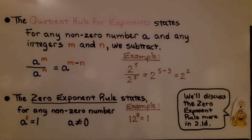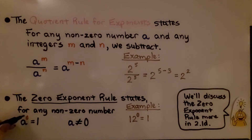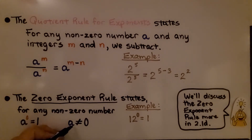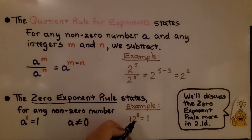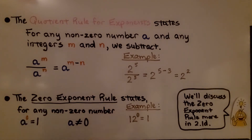The zero exponent rule states that for any non-zero number a raised to the zero power, it's going to equal 1. It cannot be zero, so a is not equal to zero. An example would be 12 to the zero power is equal to 1. We're going to discuss the zero exponent rule more in the next lesson, 2.1d.